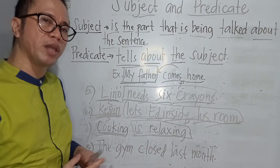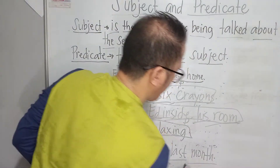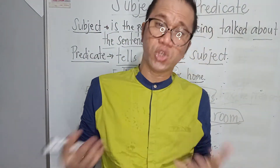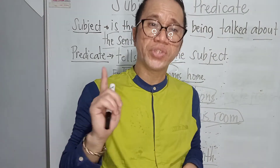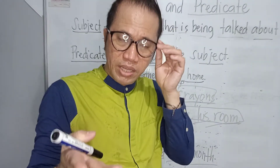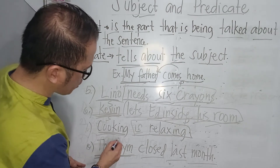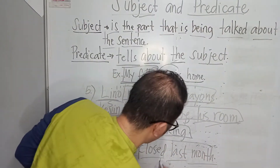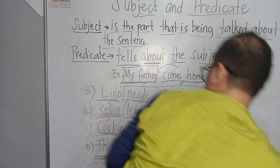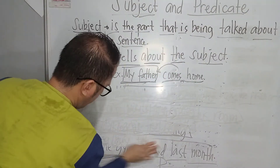Let's continue for number eight: 'The gym closed last month.' In this sentence, we are talking about the gym, so 'the gym' is our subject. We are going to underline 'the gym' as our subject, and 'closed last month' is our predicate. Hope you are following our discussion about how to identify subject and predicate.